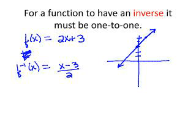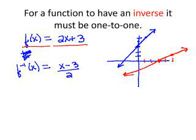Remember: since we interchange x and y to find the inverse, the coordinates of the original function get swapped. For example, the point (0, 3) on the original becomes (3, 0) on the inverse, and (1, 5) becomes (5, 1). Graphically, inverse functions are symmetrical about the line y = x — if you fold over that line, the original maps onto the inverse.